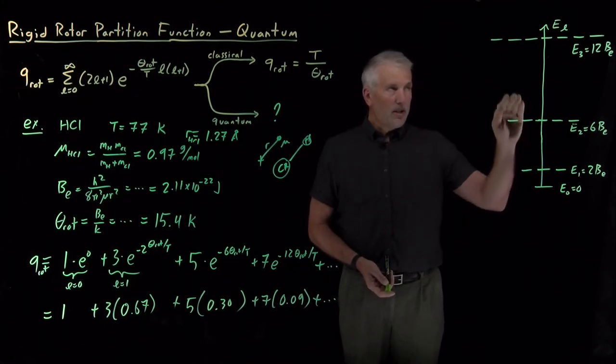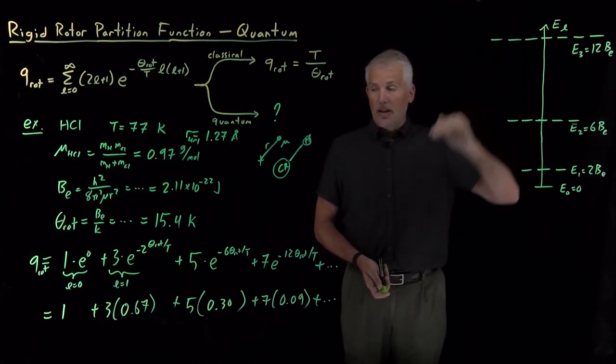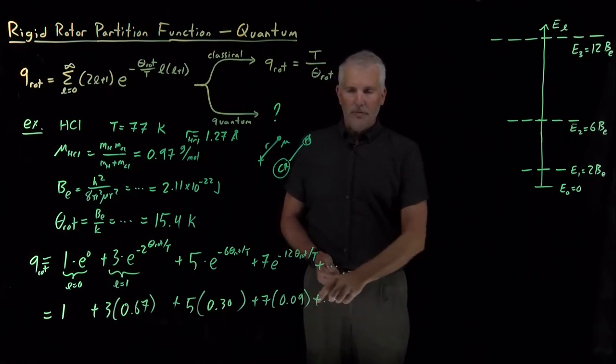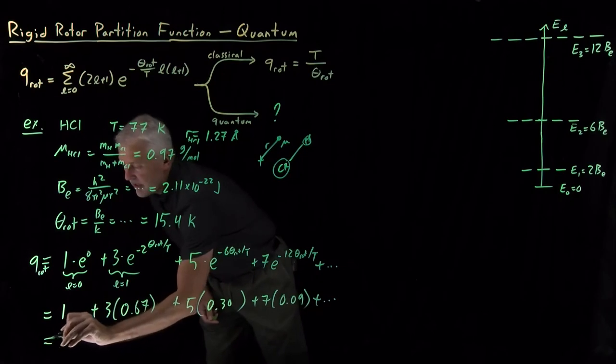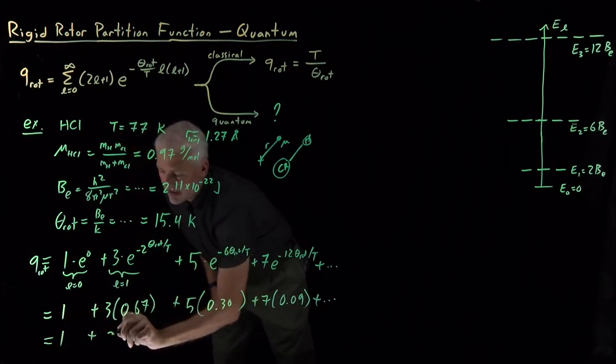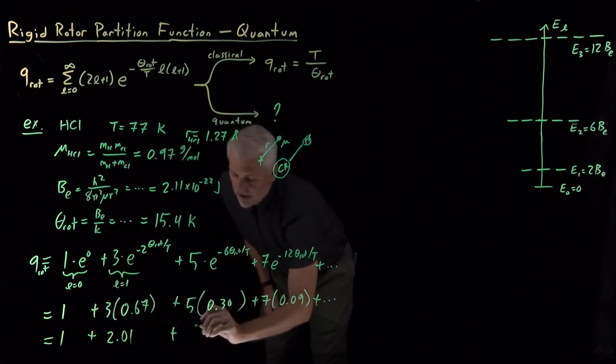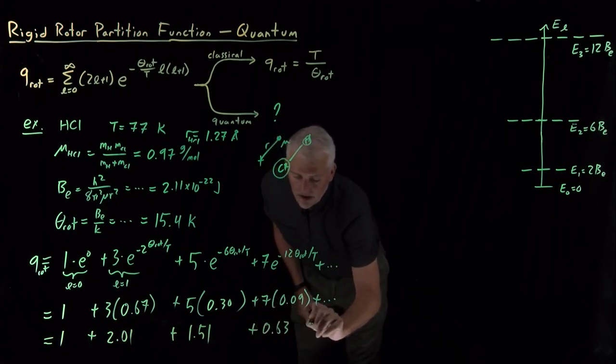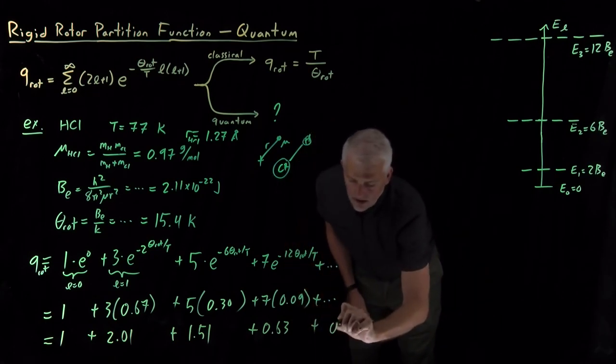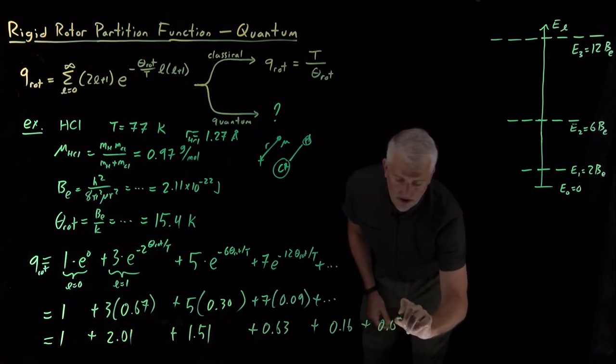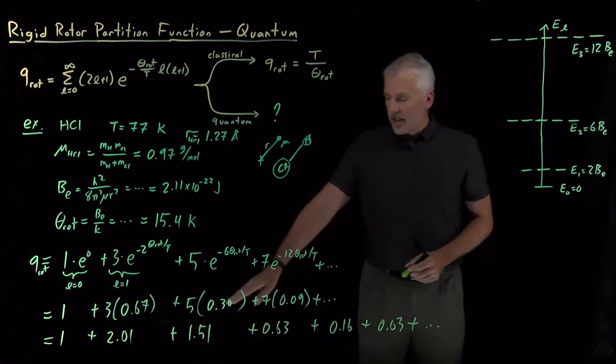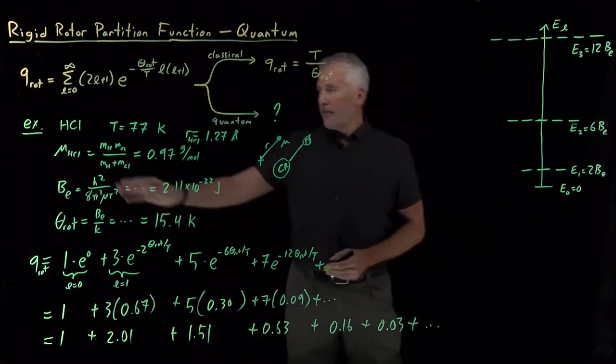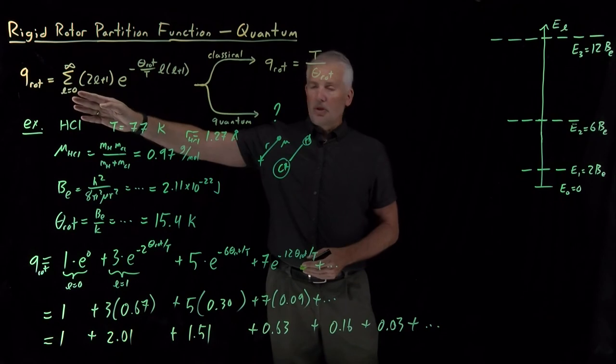These Boltzmann factors are becoming smaller and smaller, essentially because the probability of occupying each one of these states is getting smaller and smaller as we climb the energy ladder. And since we're not under classical conditions, those numbers are getting small pretty fast. So we don't have to include too many of these terms before they get small enough. If I go ahead and multiply these out, three times 0.67, five times 0.3, I think with rounding that actually comes out to 1.51, and then 0.63. The next few terms look like 0.16, 0.03.